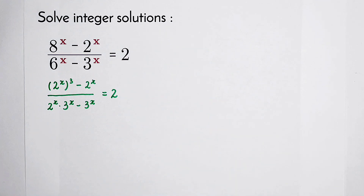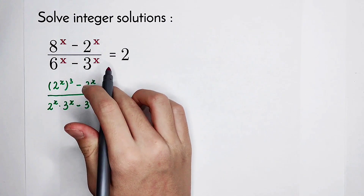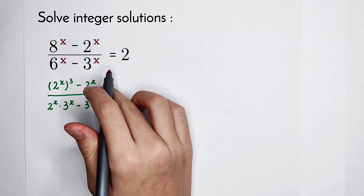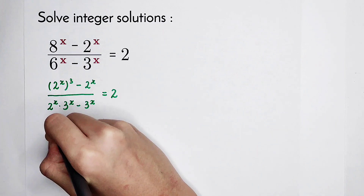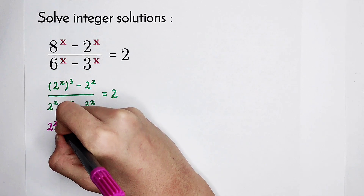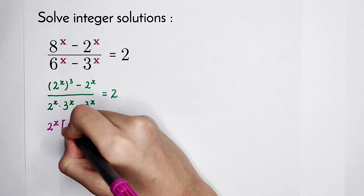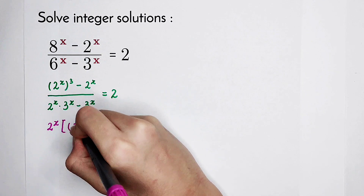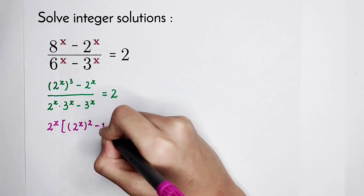Now, what should we do? In the numerator, we have 2 to the power of x cubed minus 2 to the power of x. We can take out a 2 to the power of x. So it is 2 to the power of x times, and what's in the bracket? It is 2 to the power of x, all squared, then minus 1.